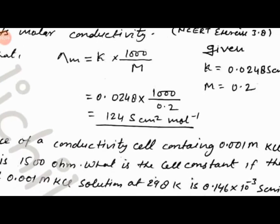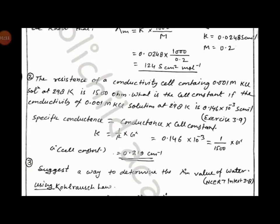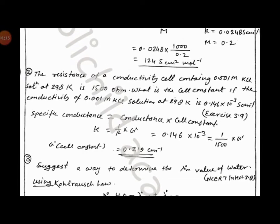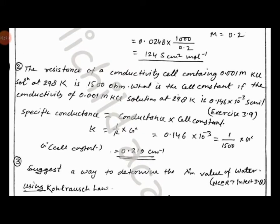So the value of molar conductivity is 124 Siemens cm squared per mol. In the next question, the resistance of a conductivity cell containing 0.001 molar KCl solution at 298 Kelvin is 1500 ohm.